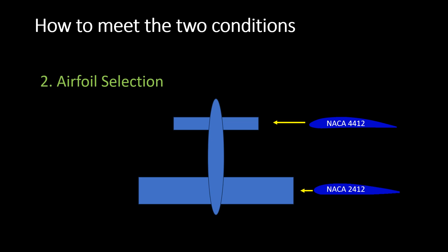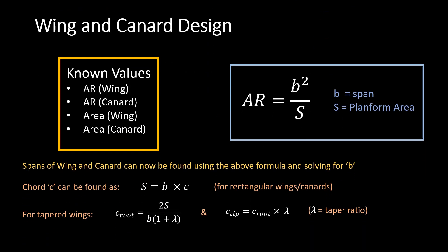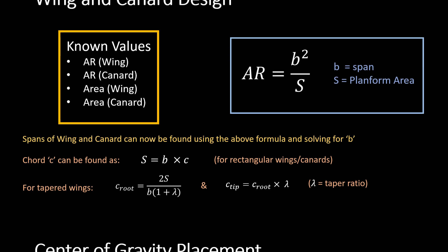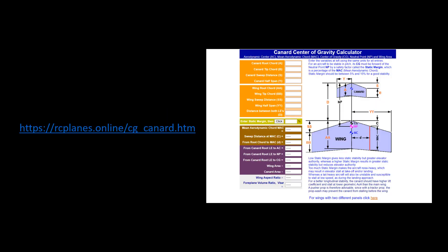Now that you know the aspect ratio and the wing area of both the wing and canard, you can find its chord and span using these formulas. Now we must locate where the plane's neutral point is and where to put its center of gravity. There is an online calculator by RC Planes Online to do just that.